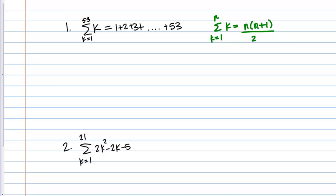Let's apply that formula to our problem. If you line up our problem with the formula, our N is 53 — we're summing from K equals 1 to 53. Plugging into the formula, this is going to equal 53 times 54 divided by 2. If you put that into your calculator and multiply it out, you get 1,431.